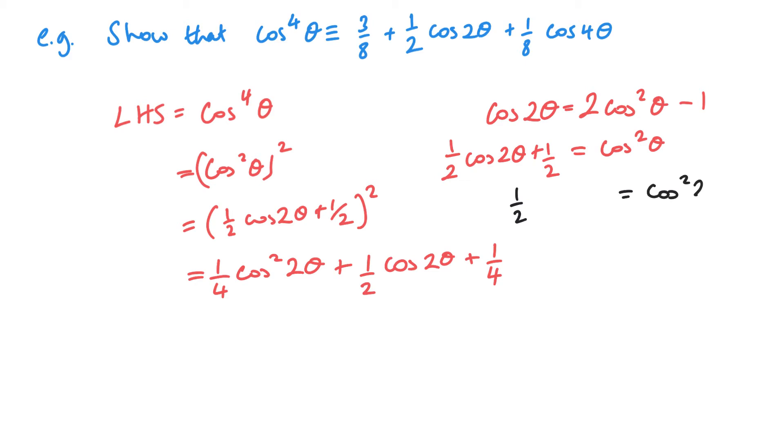But what I'm looking at now is a half. So if I look at cos squared 2 theta, this would be a half cos 4 theta plus a half. So that is my second substitution there.